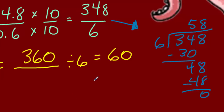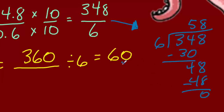So I can say that that would be 58. So the next thing I'd want to think about is, is our quotient reasonable? Sure, it's reasonable because we had 58 and we had an estimated quotient of 60, and 60 is extremely close to 58.